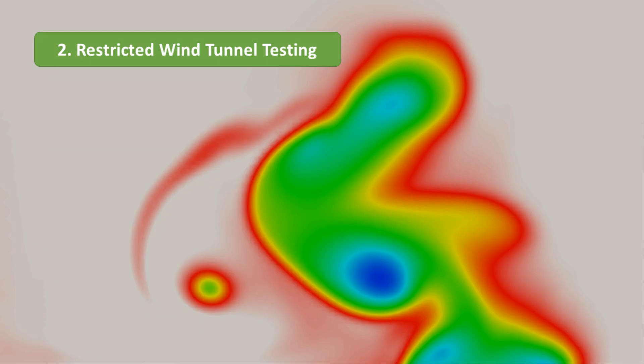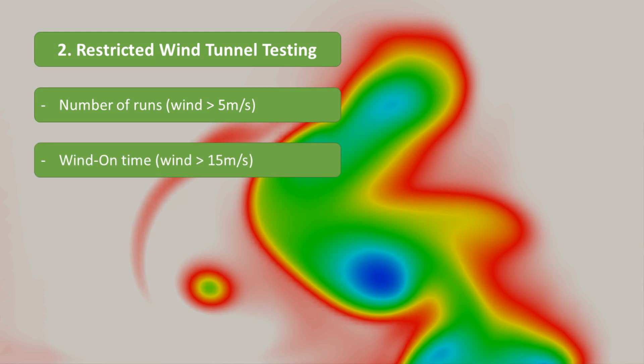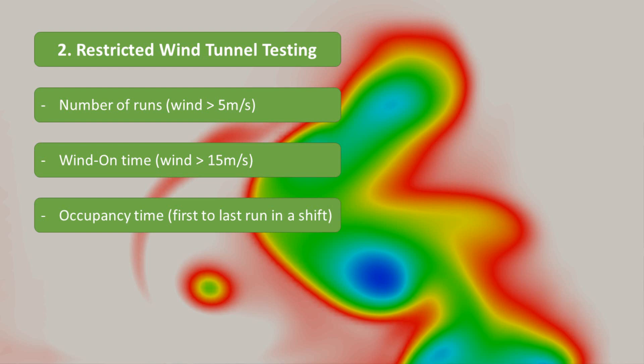Wind tunnel testing is restricted based on the number of runs, where wind greater than 5 metres per second signifies the start of a run; wind-on time, where the wind is greater than 15 metres per second; and occupancy time, which begins at the start of the first run and ends at the end of the last run of that shift. This means that you can prepare or pack up before or after your runs as much as you'd like, provided you're not running the tunnel at the same time — which is what I imagine most F1 teams would be doing to reduce their occupancy time, if that's a limiting factor.